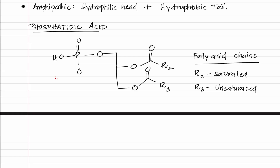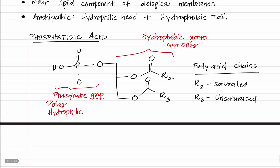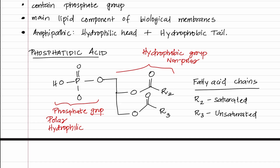This is the basic structure of phosphatidic acid or phospholipids. The phosphate group is the polar or hydrophilic part, making it the head group, while the fatty acid chains form the hydrophobic or non-polar group. We all know that this arrangement forms the lipid bilayer.